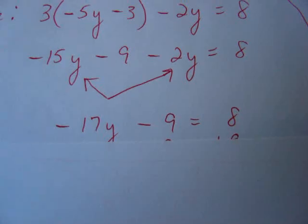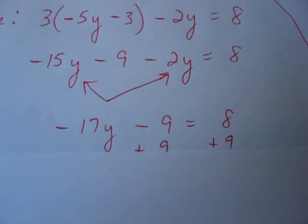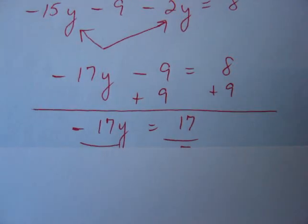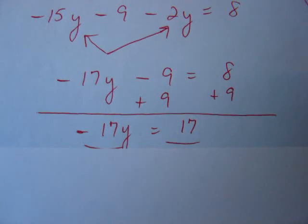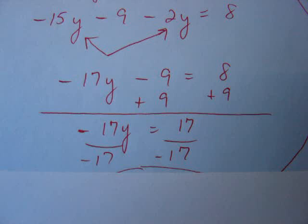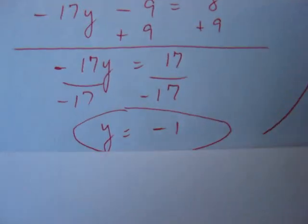Now in this process, we have to get y by itself. So we want to get rid of minus 9. We add 9 to both sides. And now we have negative 17y equals 17. We don't want negative 17 times y. To get rid of it, we divide both sides by negative 17. Therefore we have y equals negative 1.